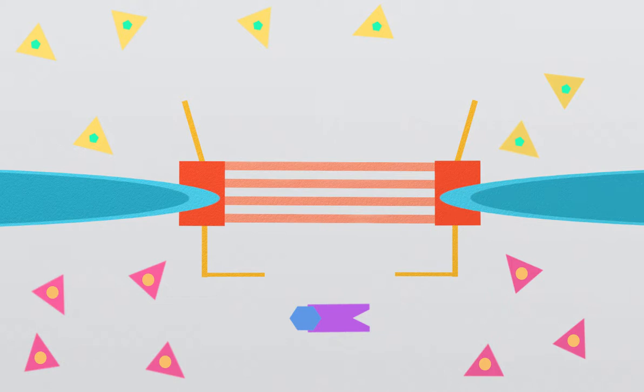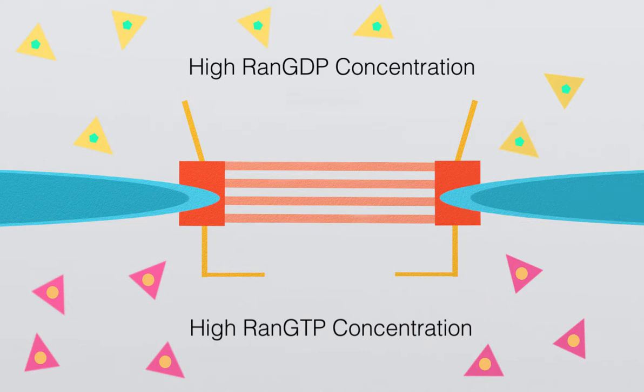Nuclear transport relies on a high concentration of RAN-GTP in the nucleus and a high concentration of RAN-GDP in the cytoplasm. RAN is small enough to freely diffuse in and out of the nucleus.